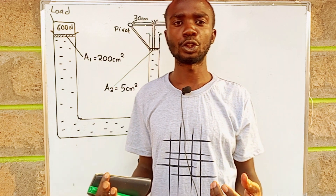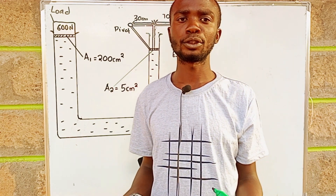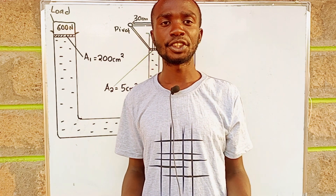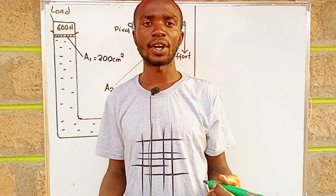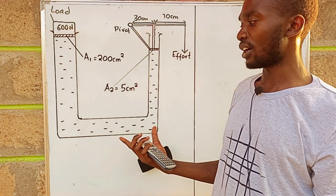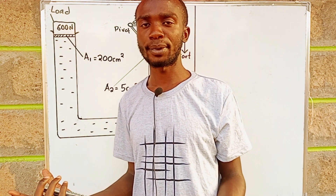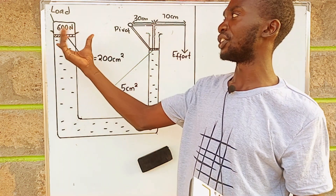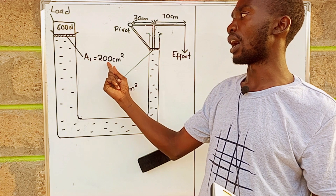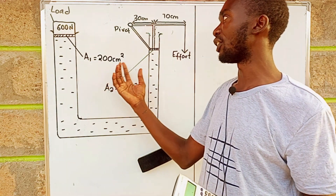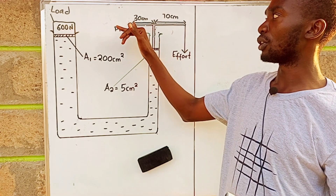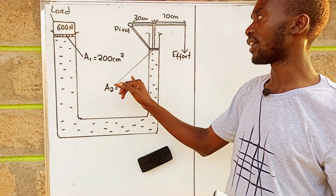Welcome again. In this tutorial we're going to learn about how to calculate the mechanical advantage, velocity ratio, and efficiency of a hydraulic press system. The figure on the board is the hydraulic press system. We have a load of 600 newtons, and the cross-sectional area is equal to 200 square centimeters. The effort is applied at this particular point, and there is a lever which has a pivot.